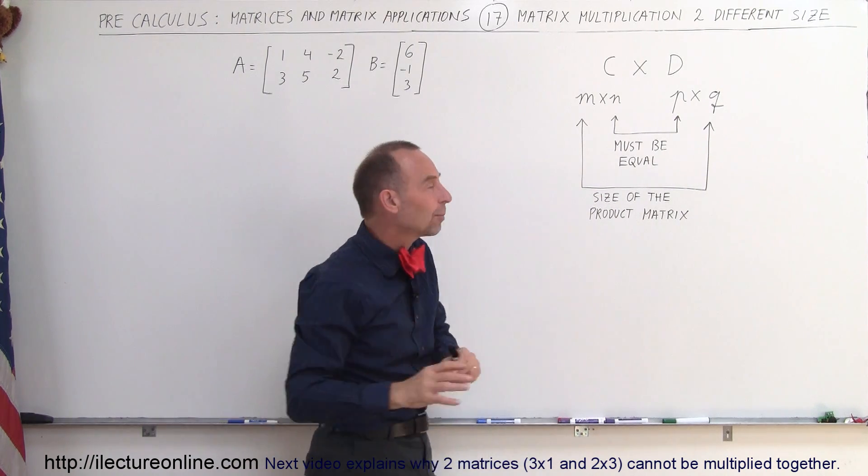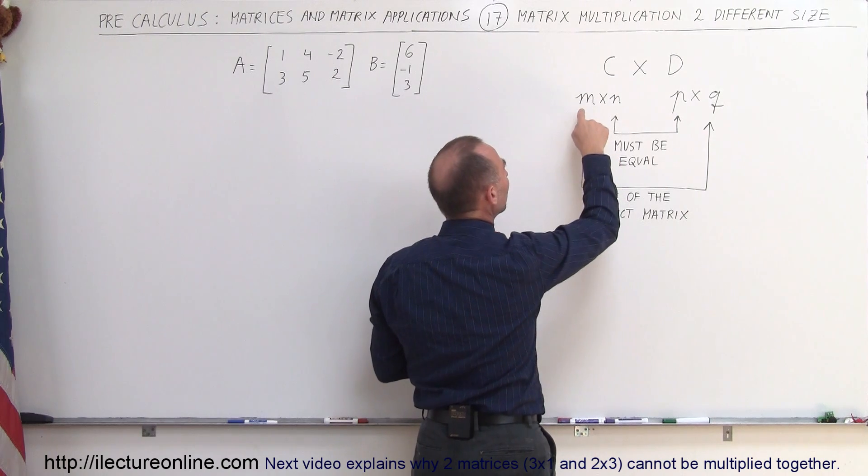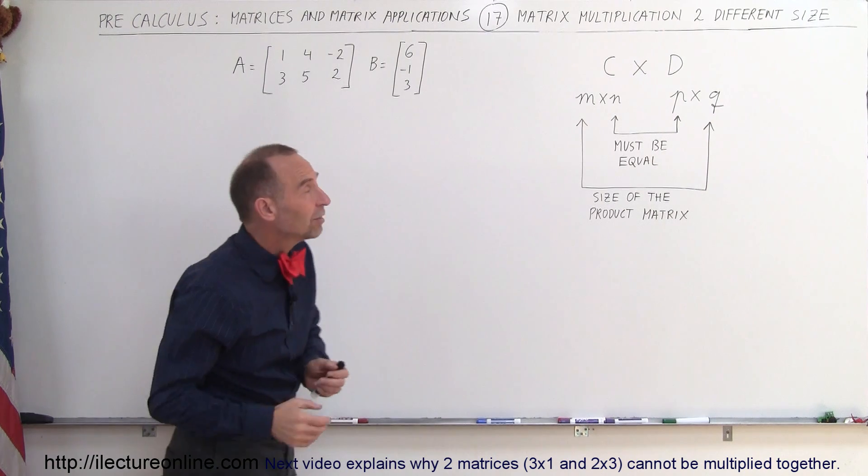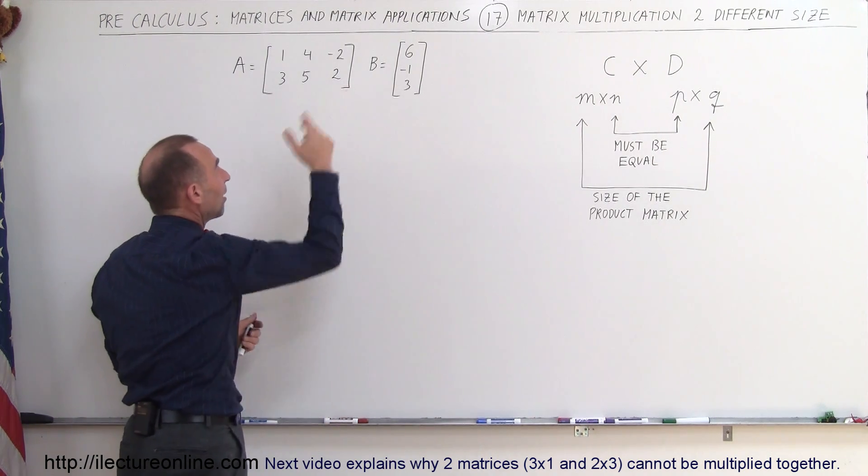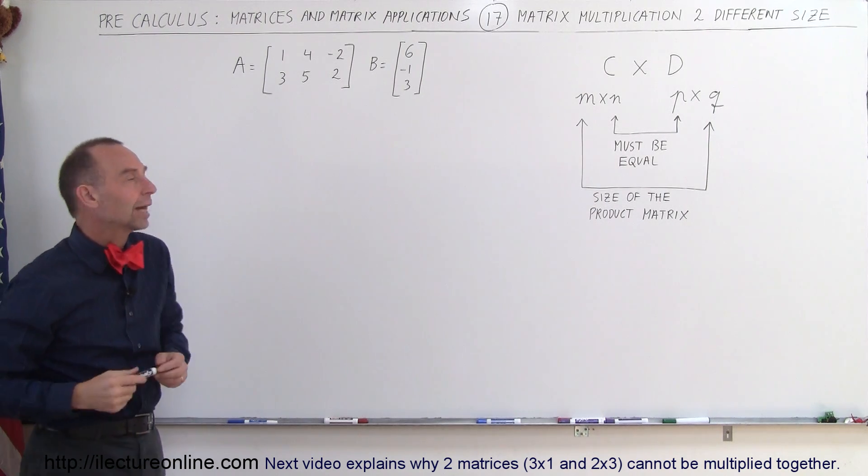And the resulting size of the product, the matrix of that product, will be equal to the number of rows of the first matrix times the number of columns of the second matrix. So here we have two matrices A and B and they're obviously not square matrices, they don't have the same number of rows as columns. Can we multiply them together?